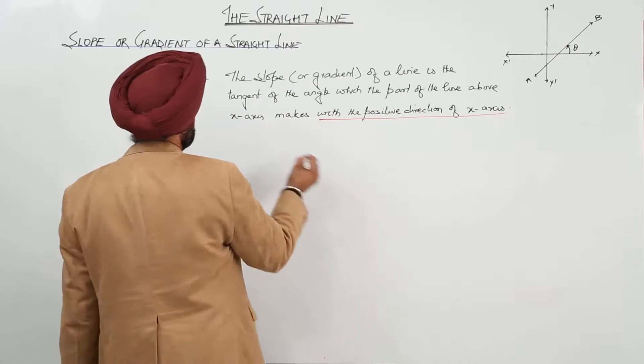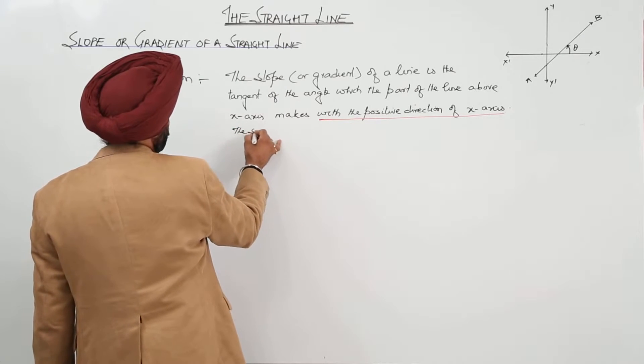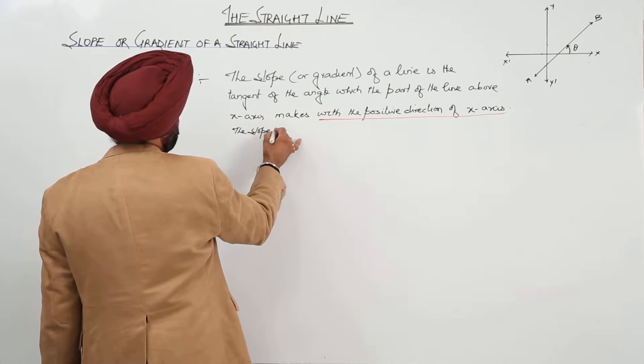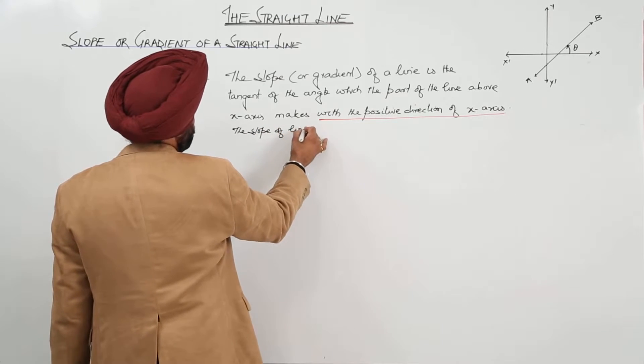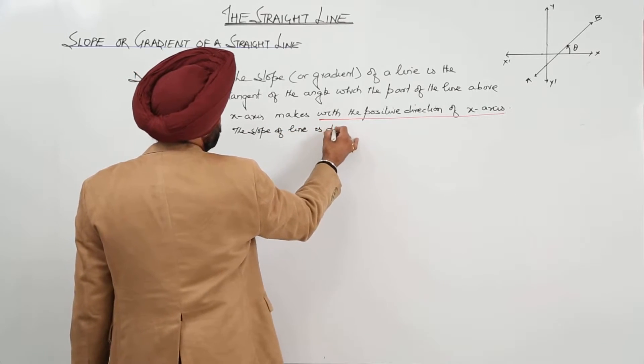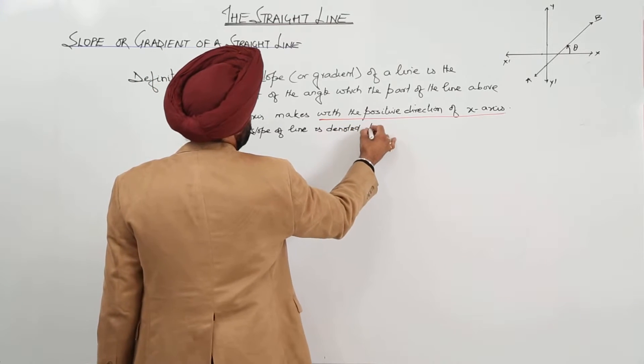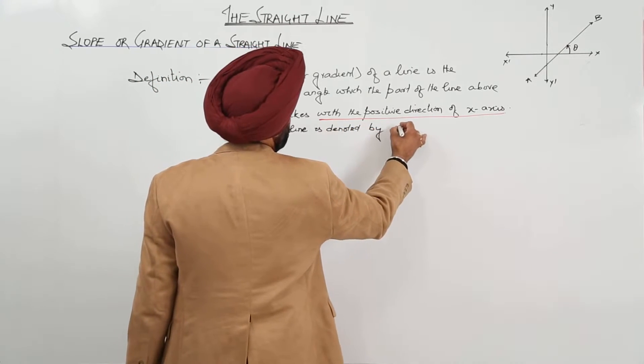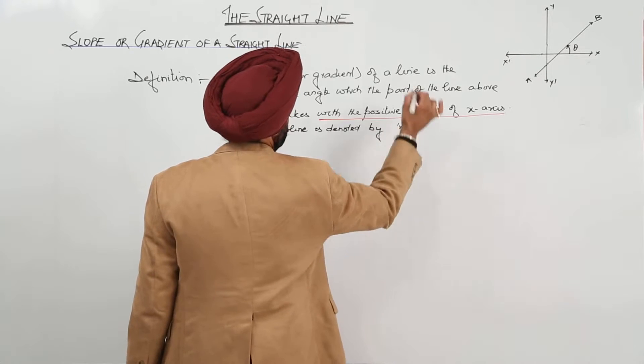Now, the slope of line is denoted by the letter M.